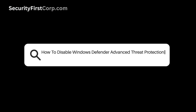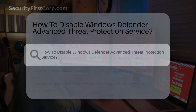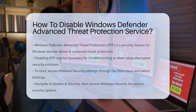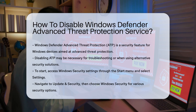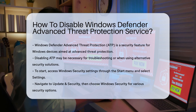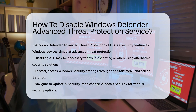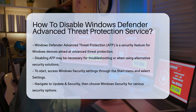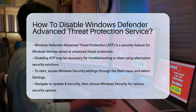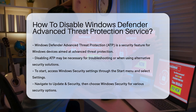How to disable Windows Defender Advanced Threat Protection Service? Windows Defender Advanced Threat Protection, or ATP, is a security feature designed to protect Windows devices from advanced threats. Disabling this service can be necessary for specific scenarios, such as troubleshooting or using alternative security solutions.